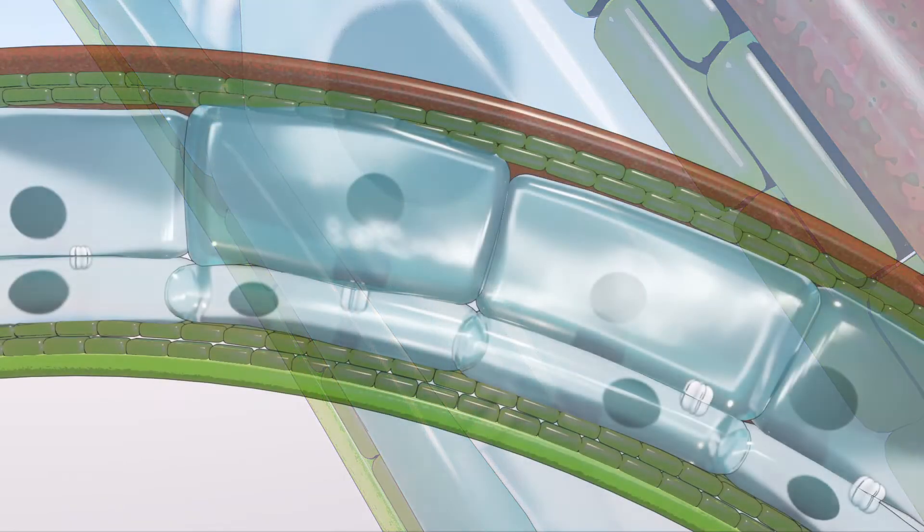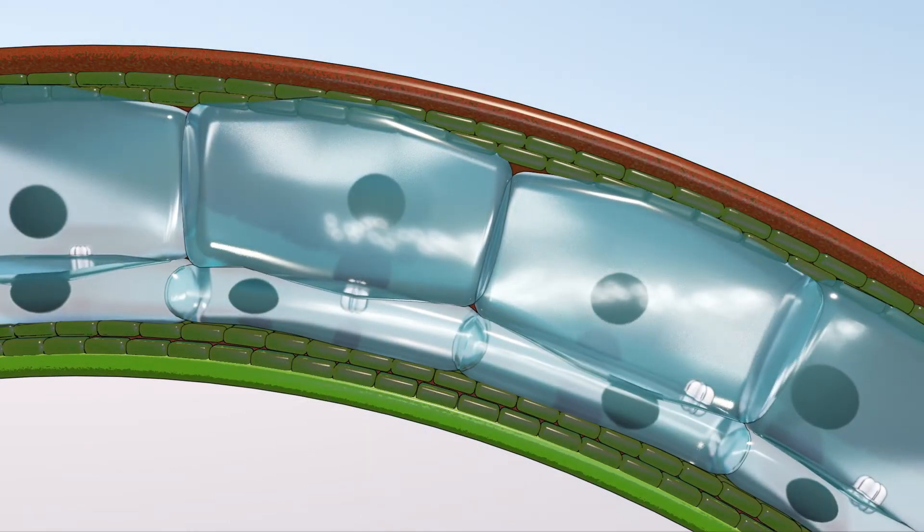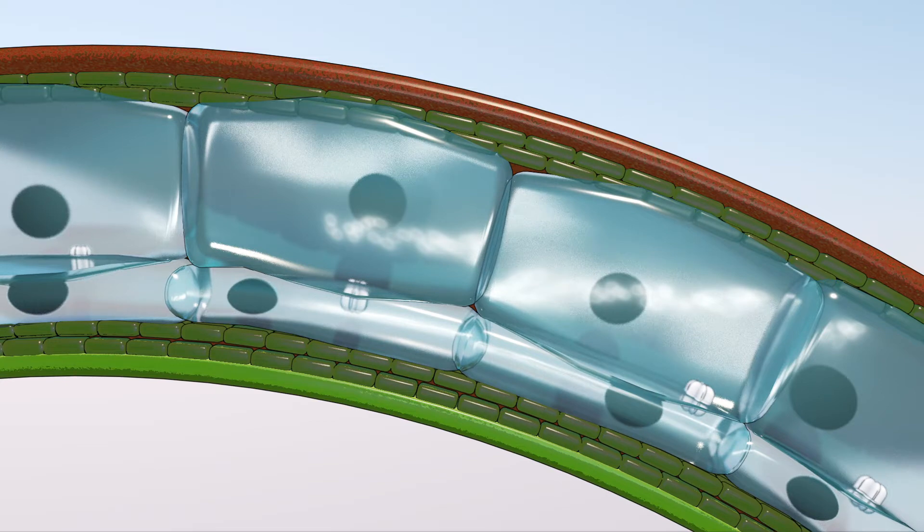In the flytrap's open state, the aquaporins are closed and the cells in the inner layer are swollen with water, while the cells in the outer layer contain minimal water and are collapsed.